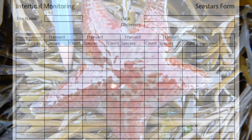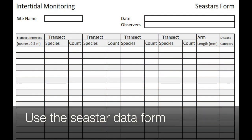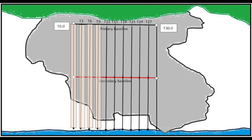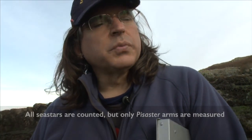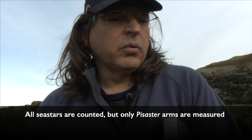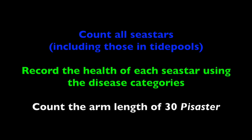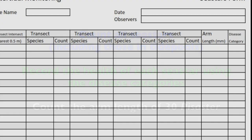For the swath transect method, use the sea star data form. All sea stars that fall within one metre of each side of each transect line are recorded. We're going to count all the species of starfish we encounter, but we are only going to measure pisaster. We want to get the location of the starfish as well, so that's why we're going to do it along the transect. The data you will collect includes counting all of the sea stars, recording the health of each sea star, and recording the arm length of 30 pisaster sea stars.